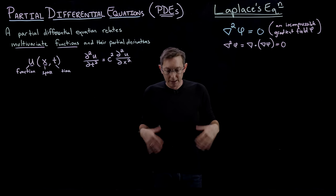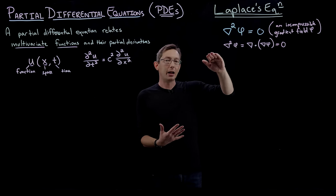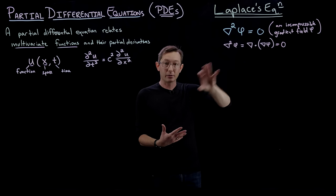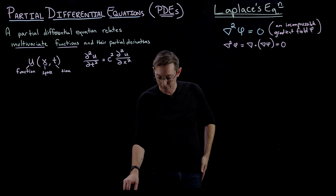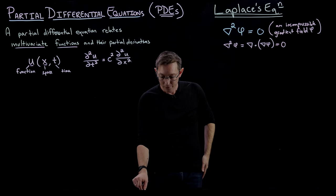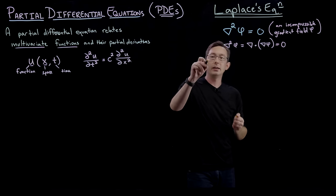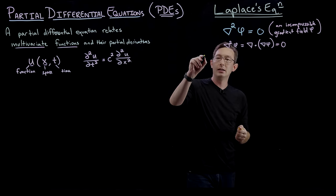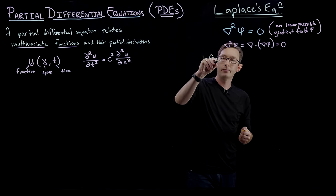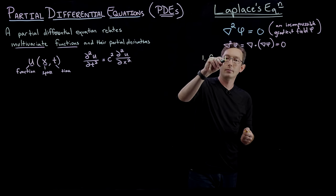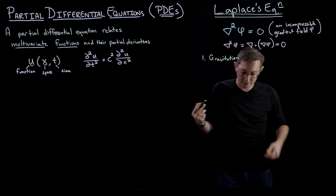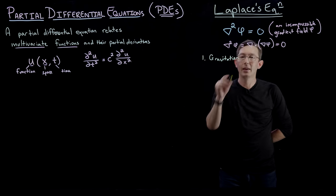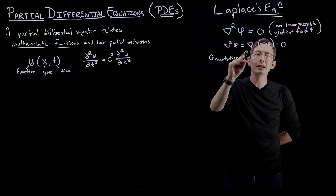What I want to do now is write down a number of the physical systems where Laplace's equation comes up. The first example is going to be gravitation — the gravitational potential — and this is really important.